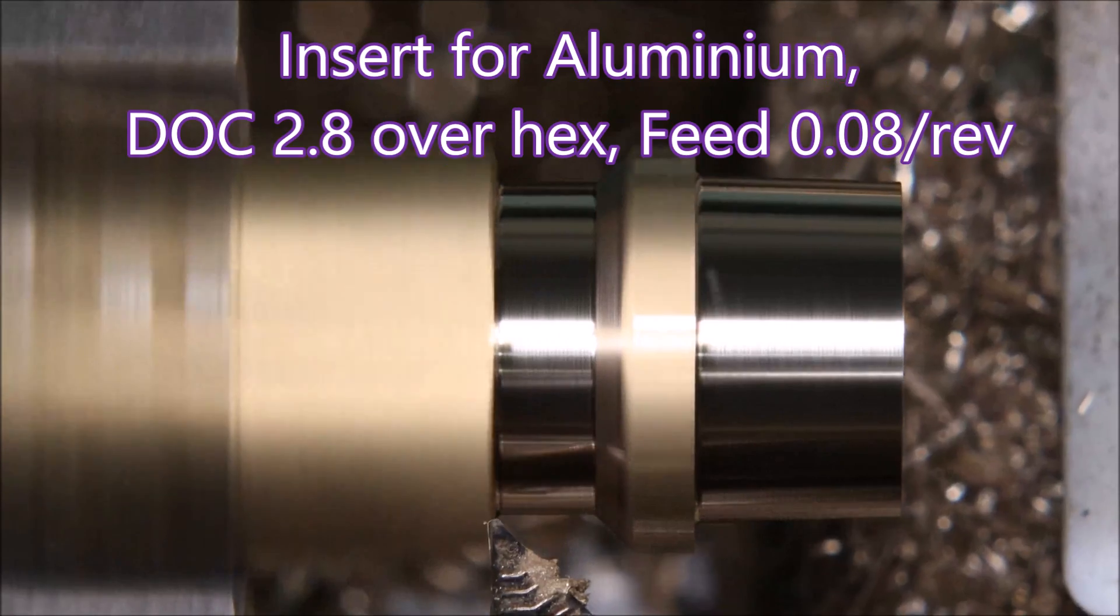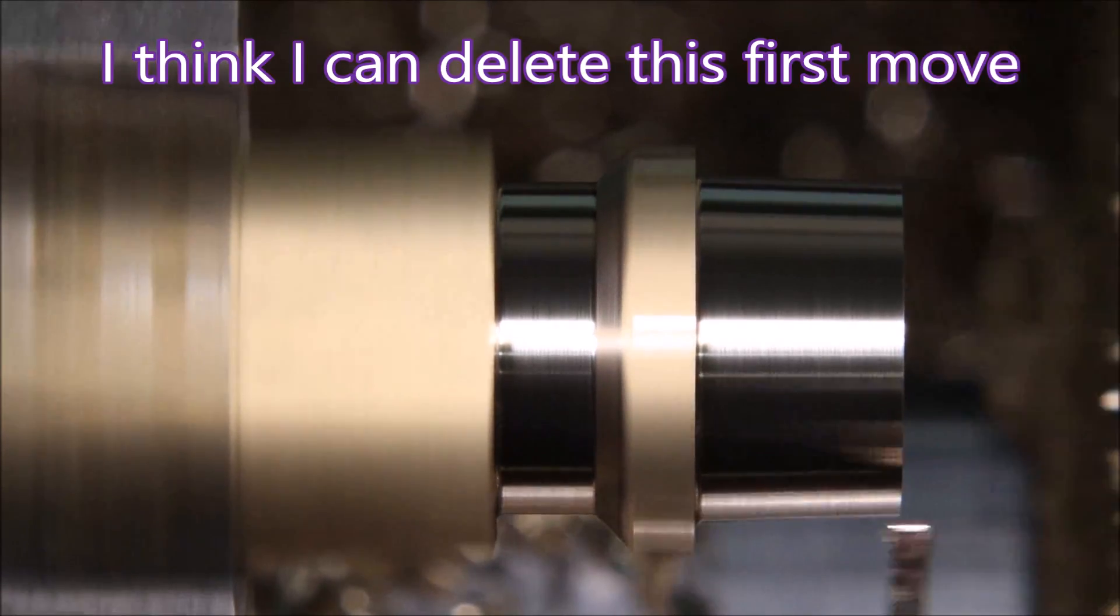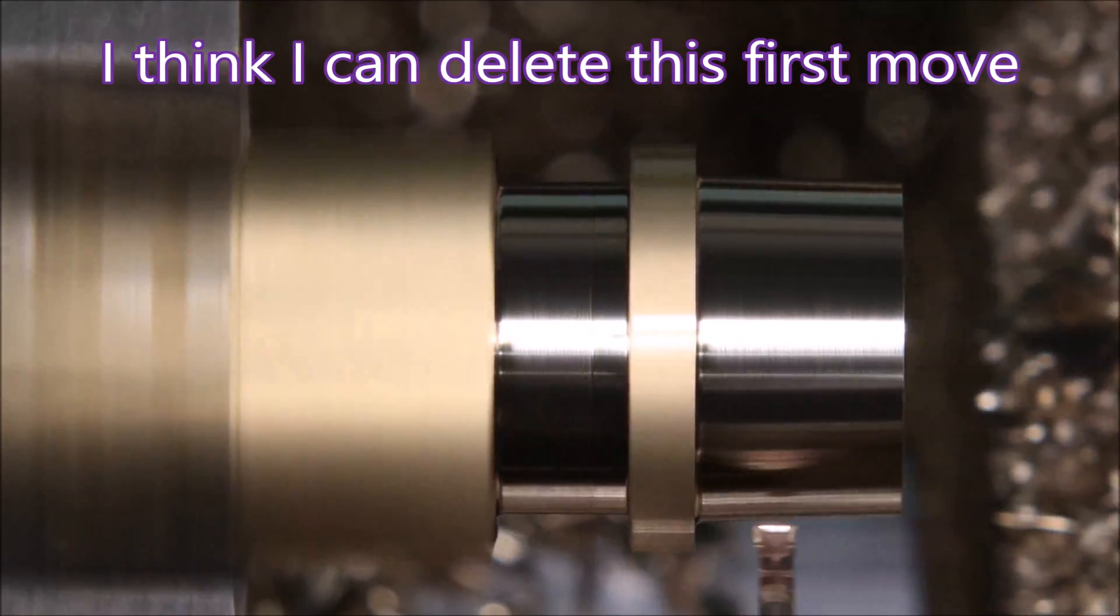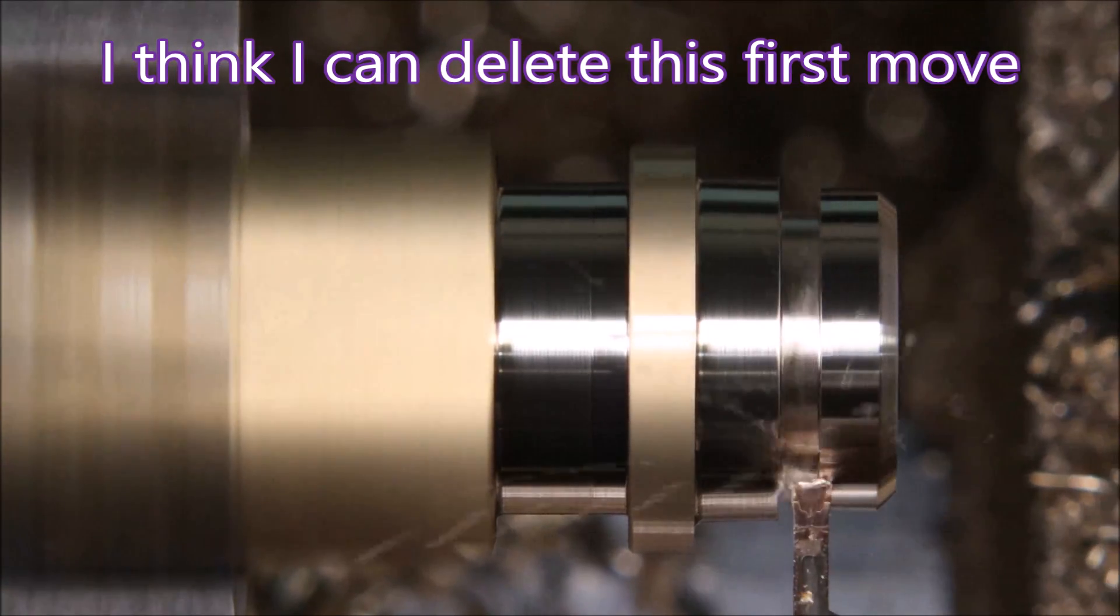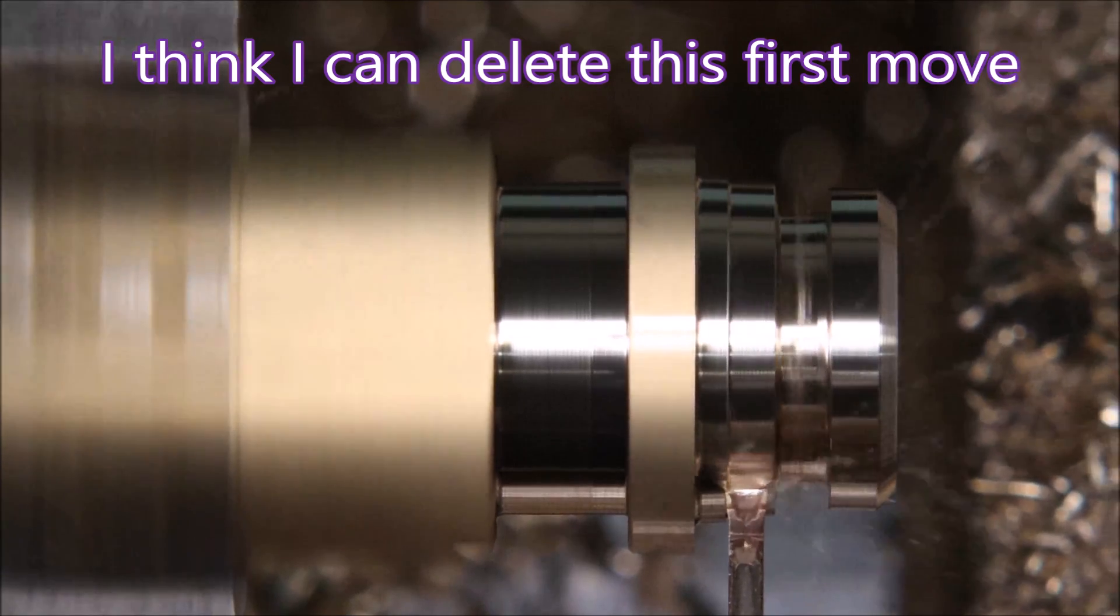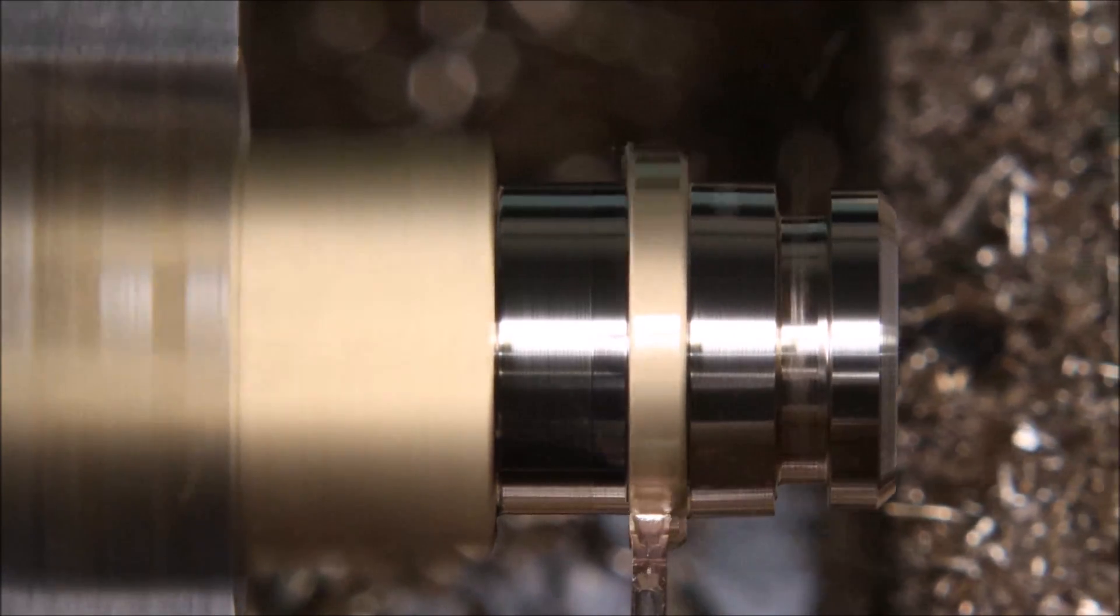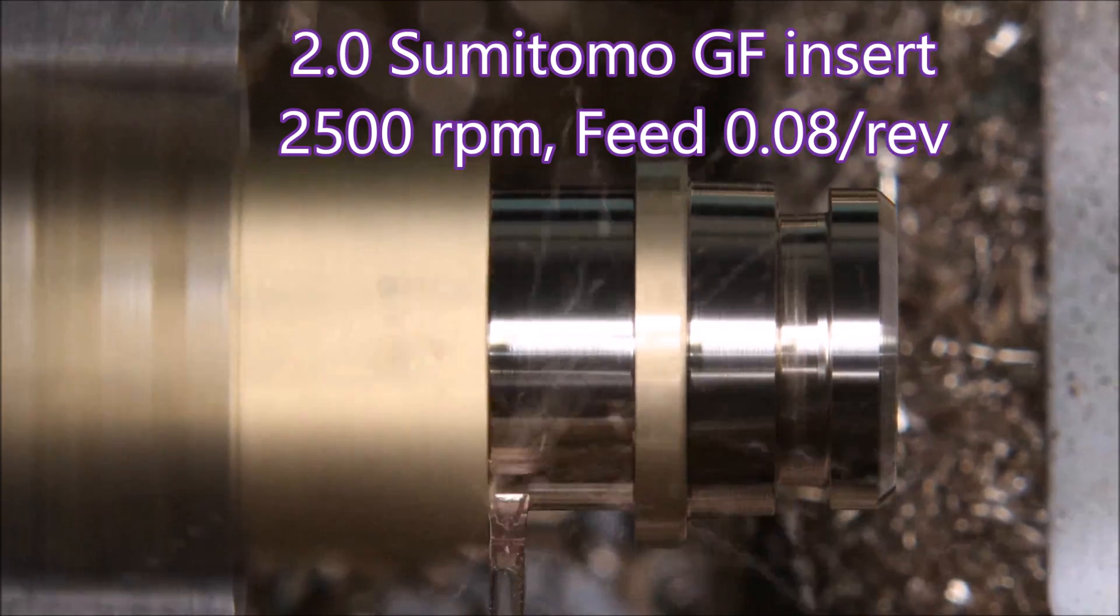Sometimes in a video I see things I can change, like this first move of the parting tool. I thought I needed it, but looking at the video I think perhaps I don't need it at all. This is a Sumitomo GF style chip breaker low cutting force insert.